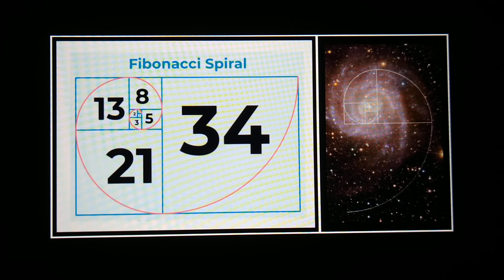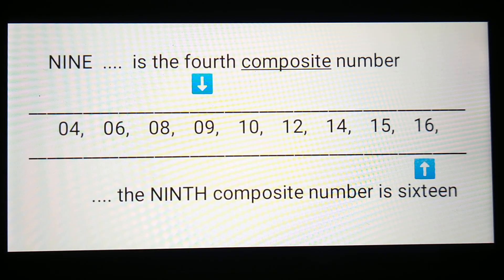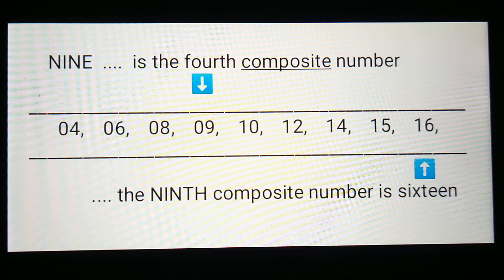Next I'm going to show the ninth composite number and where the number nine falls on the composite numbers chart — there will be links in the description box. A composite number is basically any number that's not prime, not zero, and not one. Here are the first nine composite numbers. Notice that the number nine is the fourth composite number, and the ninth composite number is 16. This brings us back to the magic square of Jupiter.